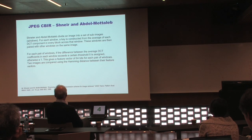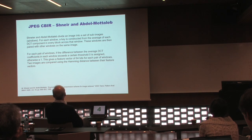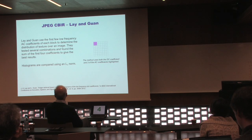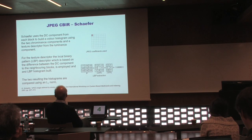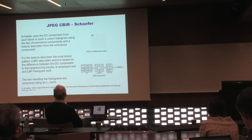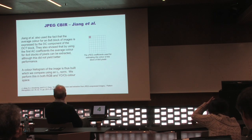One of the first approaches was by Schneier and Abdel-Mottaleb, who define windows in the image and extract a binary vector from the DCT terms, using Hamming distances for comparison. Other techniques store statistical information about AC coefficients as features. We also did earlier work deriving a color histogram from DC terms — each DC term captures the average of an 8×8 block — and added texture information using a local binary pattern descriptor based on the DC terms of the luminance channel.